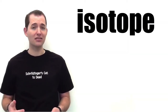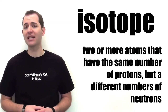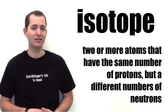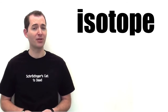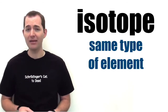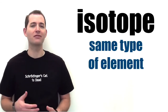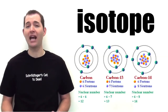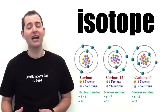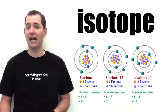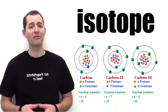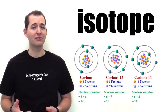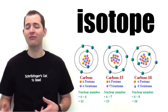Our next word is isotope. An isotope is two or more atoms that have the same number of protons but a different number of neutrons. Because they have the same number of protons, they are the same type of element, but because of the different number of neutrons, they have a different atomic mass. For example, we might have carbon-12, carbon-13, and carbon-14. Each of these isotopes of carbon has the same number of protons, which is 6, but a different number of neutrons, which is 6, 7, and 8 respectively.